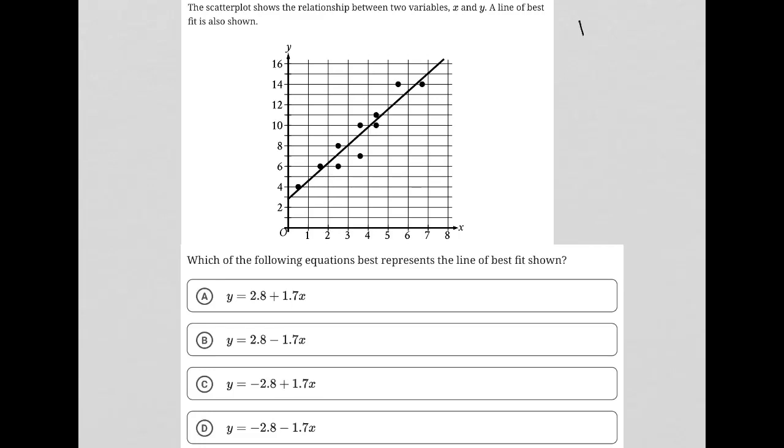So this question is a diagram question. Any question that provides some visual input I'm going to consider as a diagram question. The question starts off by saying the scatter plot shows the relationship between two variables X and Y. A line of best fit is also shown.